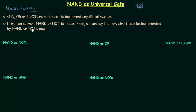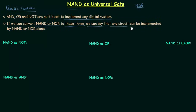We have three basic gates: AND, OR, and NOT. AND, OR, and NOT are sufficient to implement any digital system. We can implement any digital system by using AND, OR, and NOT. And if we can convert NAND or NOR to these three — if we can convert NAND or NOR to AND, OR, and NOT — we can say that any circuit can be implemented by NAND or NOR alone.